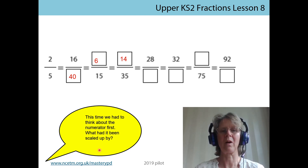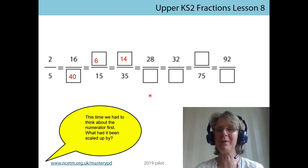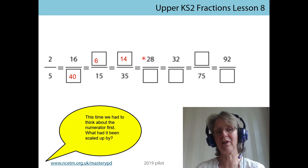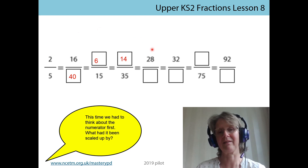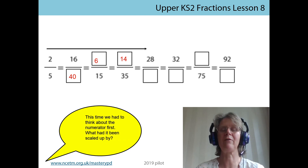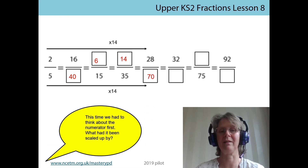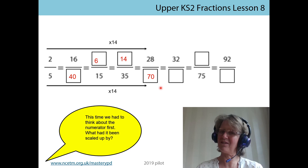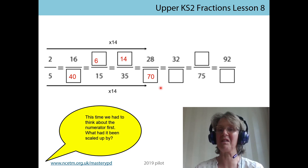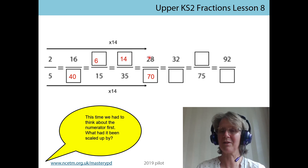We've got a change when we move to this next fraction, because this next pair of fractions has missing denominators, which means we've got to look for relationships with our numerators. My first thought was to go back to my starting fraction. If my starting fraction needs to be scaled up by 14 for the numerator, I need to do the same for my denominator, and that gets me a new fraction of 28 seventieths. I could also have used the next door fraction, because 14 to 28 is a scale factor of two, so I could have doubled 35 to get to 70.